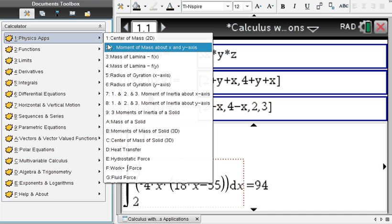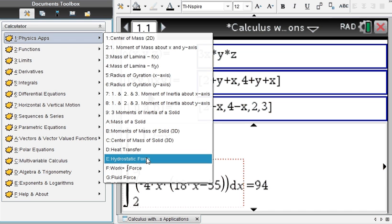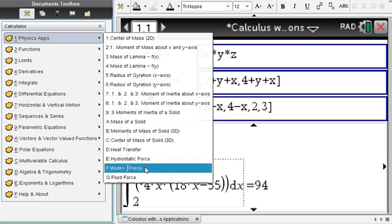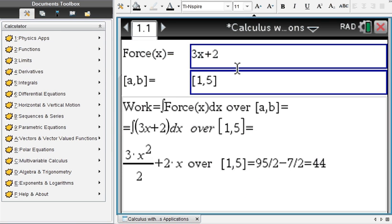So everything done here step by step for you. Heat transfer, hydrostatic force, work - something simple. You're given the force, you integrate the force over a given interval and you get the work. In this case 44. Very simple to operate, step by step solutions.